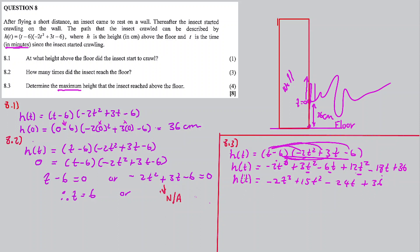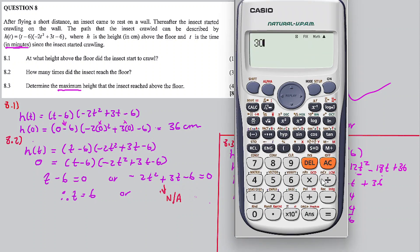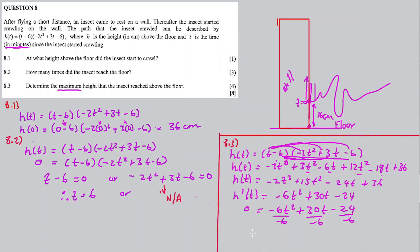So h prime of t is equal to negative 6t squared plus 30t minus 24. We equate this to zero. It's a trinomial, and we can use either the quadratic formula or the factoring method. I'll go with the factoring method. Dividing through by negative 6, the t squared must have a positive value.